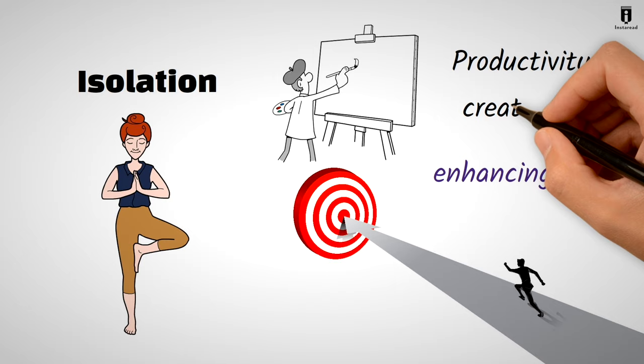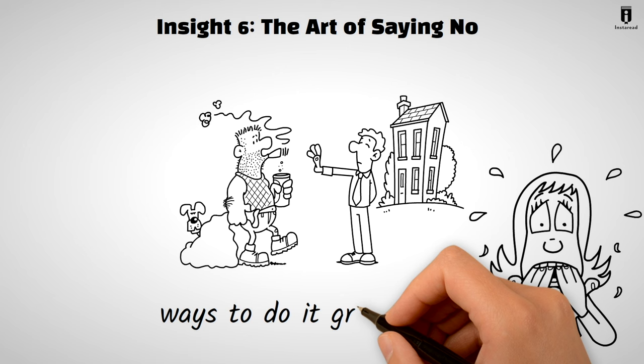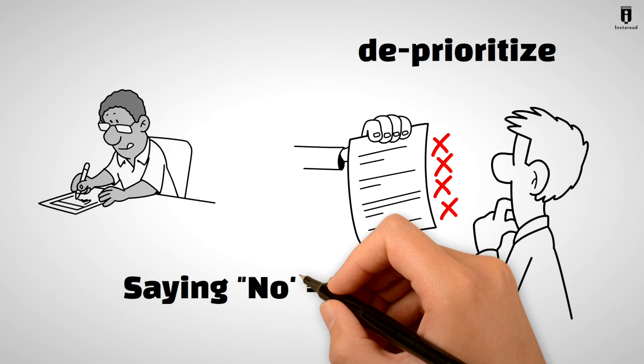Insight 6. The Art of Saying No. Learning to say no can be challenging, especially if you fear the consequences. But there are ways to do it gracefully. You can offer to consider it after completing other tasks, or ask the requester to decide what to deprioritize. Remember, saying no doesn't mean you're selfish. It means you're prioritizing what truly matters.